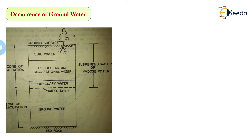Under the soil water zone, there is gravitational water. In the soil moisture irrigation relationship, we have three zones: the root zone depth, then the intermediate zone — also called hygroscopic water — and under this we have the capillary zone or capillary water. Capillary water is exactly above the groundwater level surface.